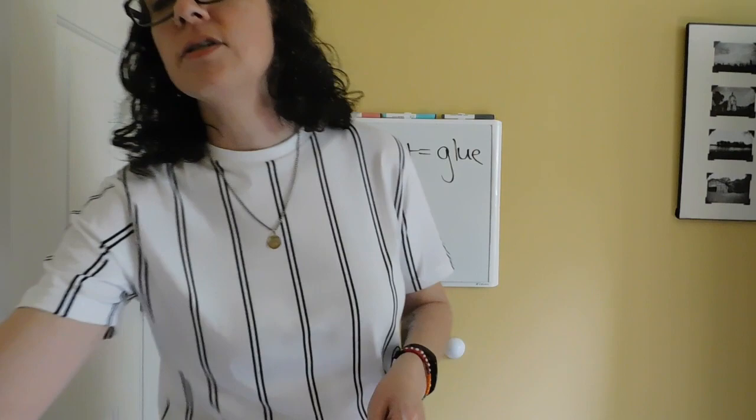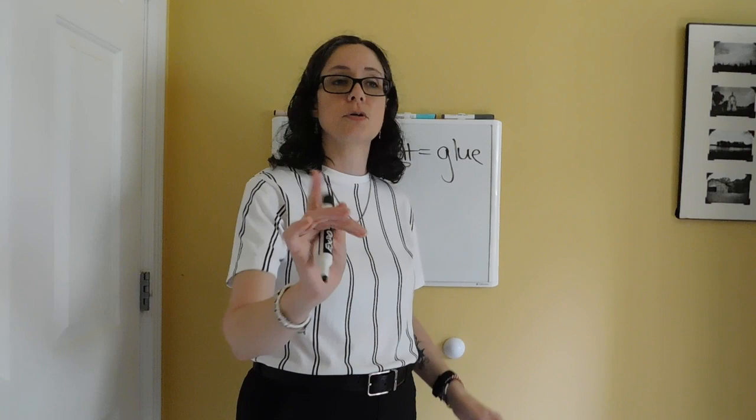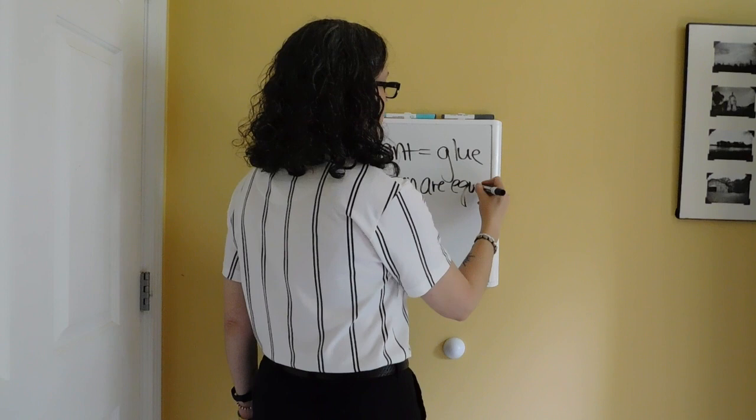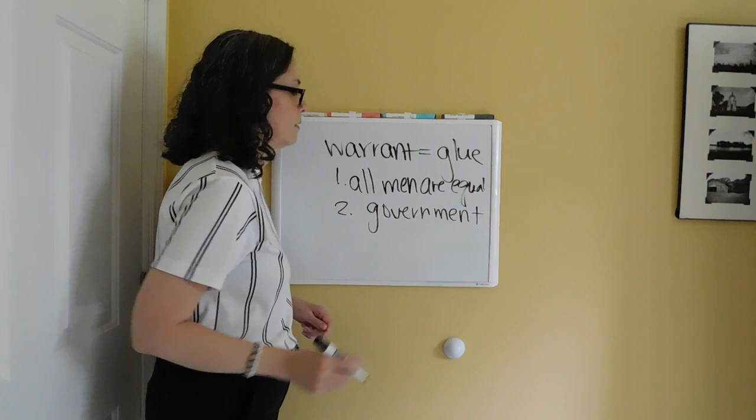He actually states his warrant explicitly in the text. He says, 'We hold these truths to be self-evident,' and then starts listing what he considers to be self-evident — this is God's creation, all men are created equal, and governments exist to help and support the people that they govern. In order for the entire rest of the Declaration of Independence to succeed as an argument, because he's going to move on to his evidence next, you have to accept this warrant. You have to accept that all men are equal, and you have to accept their claim about what the job of a government is — to ensure life, liberty, and the pursuit of happiness, to protect and support its people. If you do not accept these two things, the whole argument fails.